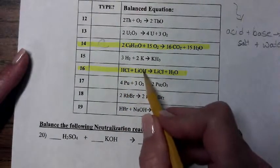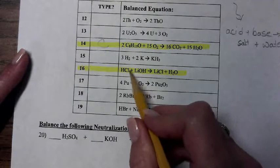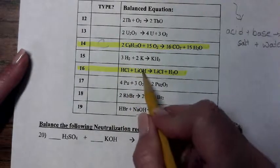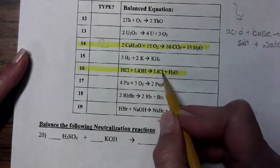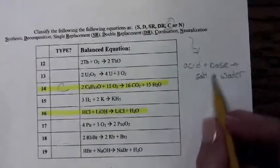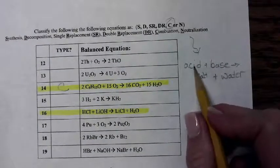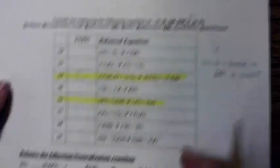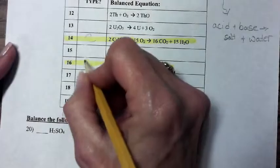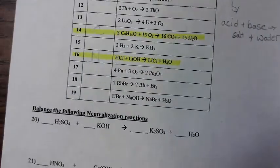Hydrochloric acid plus lithium hydroxide yields lithium chloride plus water. That's this one. Acid plus base yields salt plus water. So this, number 16, is a neutralization reaction.